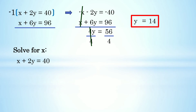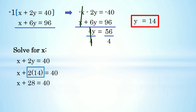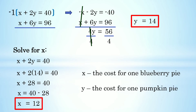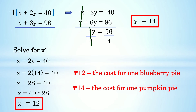Now solve for x. Balik tayo sa ating first equation: x + 2y = 40. Palitan si y ng 14: x + 2(14) = 40, so x + 28 = 40. Ilipat si 28 sa right side: x = 40 - 28 = 12. So our x is equals to 12. X is the cost for one blueberry pie — value is 12 pesos — and y is the cost for one pumpkin pie — value is 14 pesos. That is our final answer.